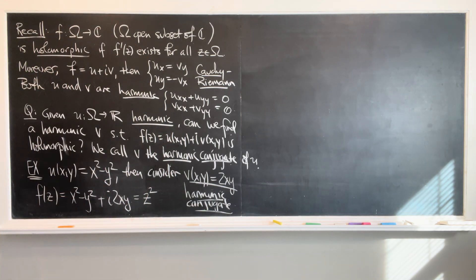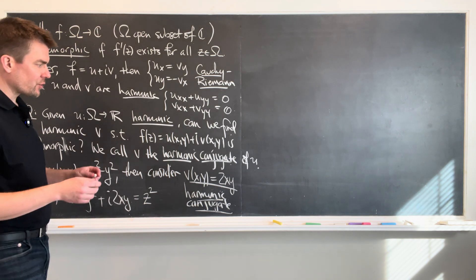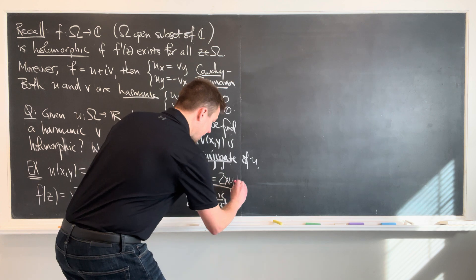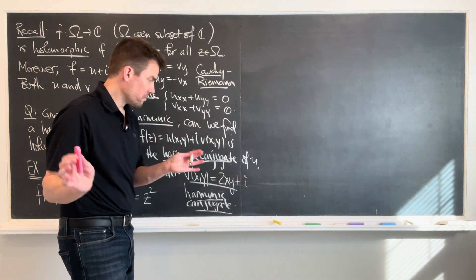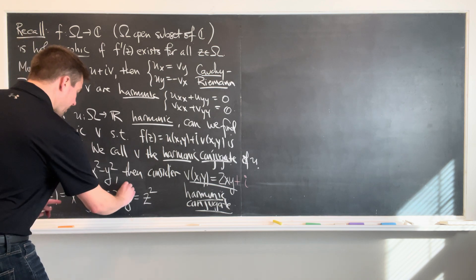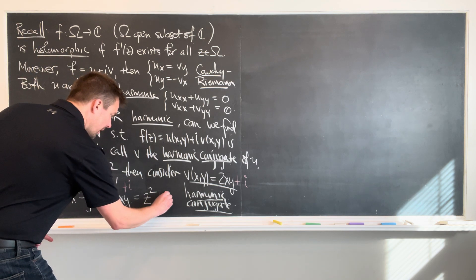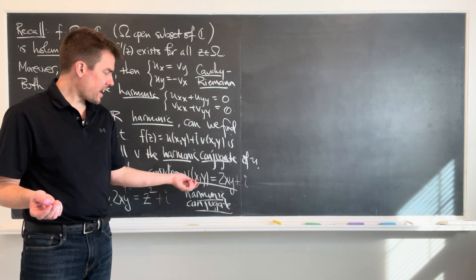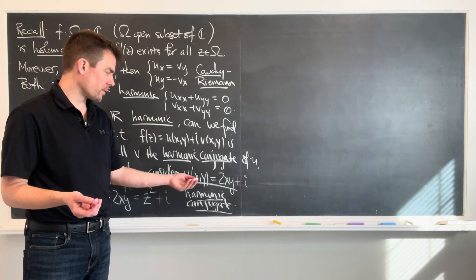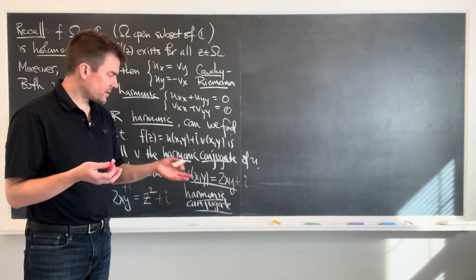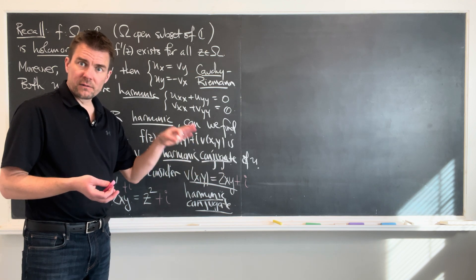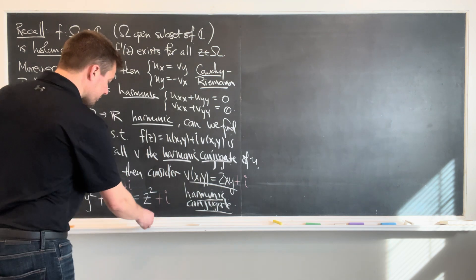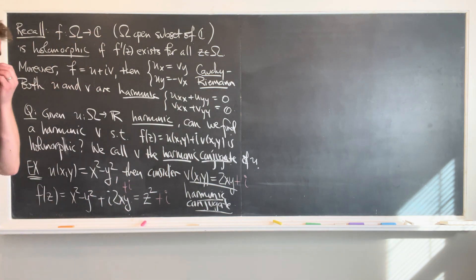All right. And so now the question becomes, now you might say, well wait a minute, actually I could have taken this 2xy and added onto that an i. And then all that changes over here is that I would have everything else would add an i. But z squared plus i is still a holomorphic function. So in other words, this guess method, or this ansatz method, or this I just thought about it method, generates a one parameter family of harmonic conjugates, modulo up to a constant, basically.